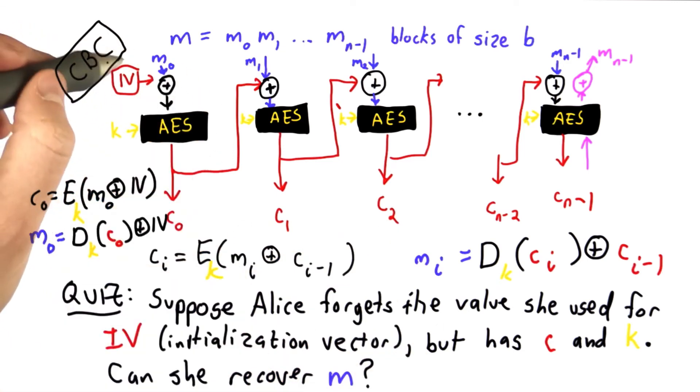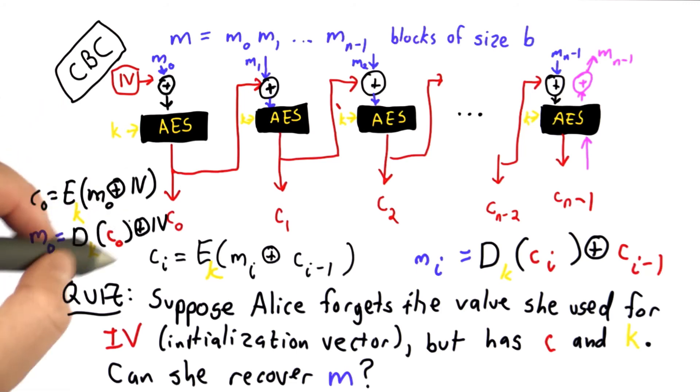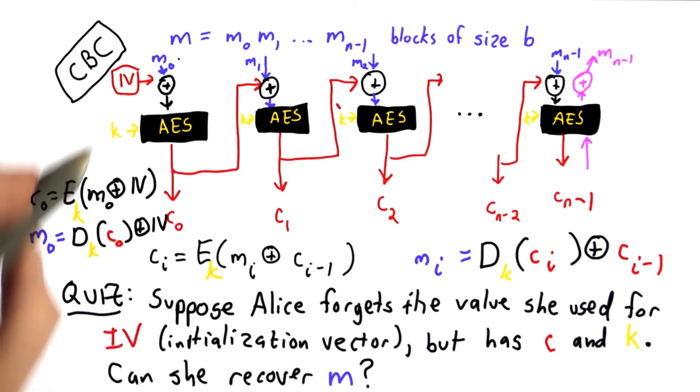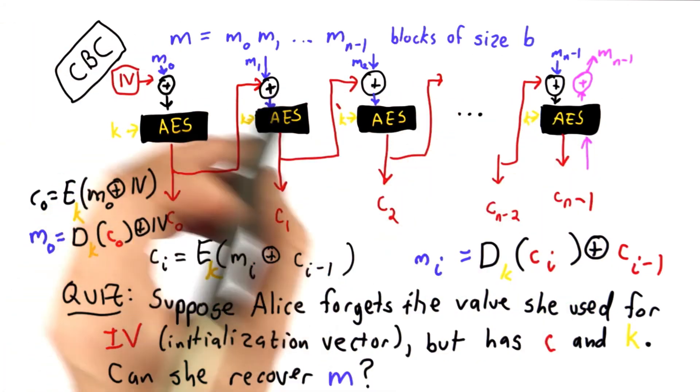And if the IV was selected perfectly at random, well, we have no information at all about the first block. Because whatever we get out of this decryption is XORed with that IV to get the message. So if we have no information about the IV, we have no information about the first message block. But we can decrypt all the other blocks.